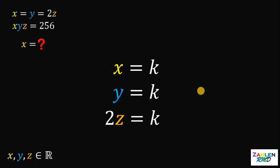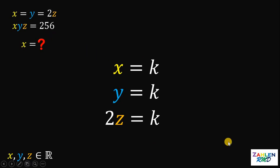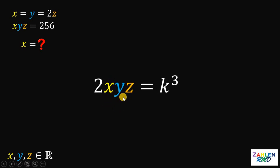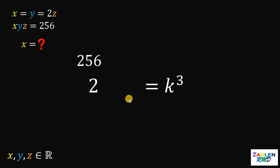We also have given that the product of x, y, and z equals 256. So, why not multiply these three equations? If we do that, we get 2 times x times y times z equals k cubed. Now, we know the value of x, y, and z — this is just 256.